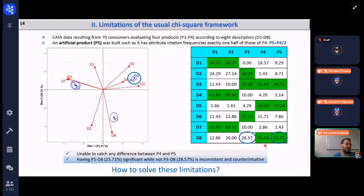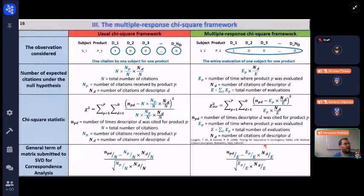So the topic of the presentation is how to solve these limitations. To solve them, I introduce the multiple response chi-square framework.